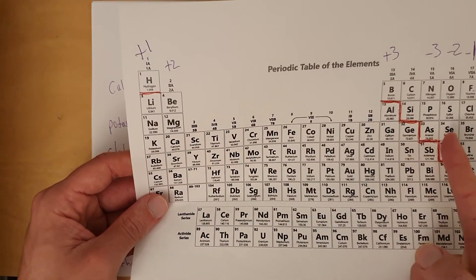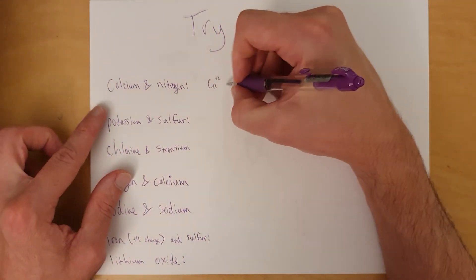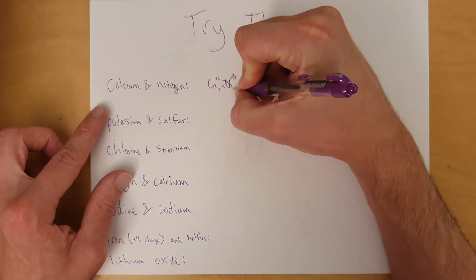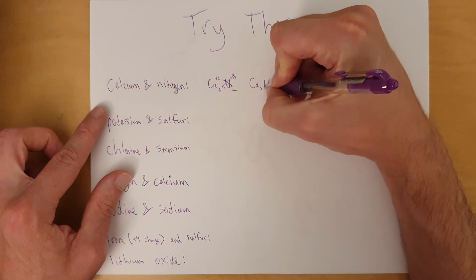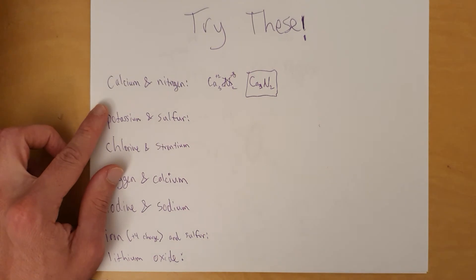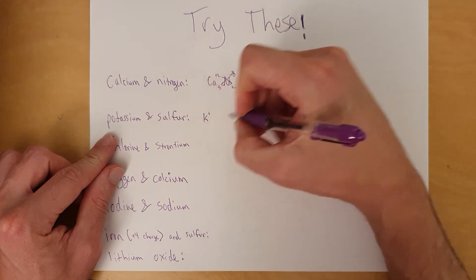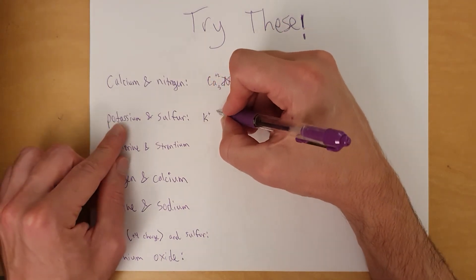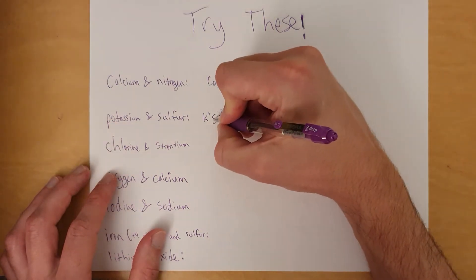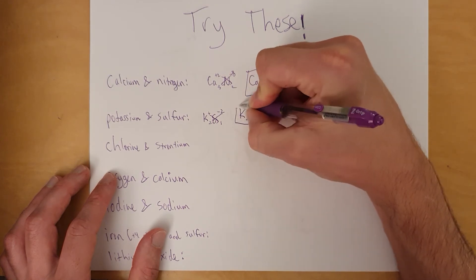Calcium is a plus two, nitrogen is a minus three. So Ca plus two, and the positive one goes first. Nitrogen minus three. Put the three here, put the two here — Ca₃N₂. Next, potassium and sulfur. Potassium on the periodic table is a plus one, and it goes first because it's positive. Sulfur is a minus two. So I put the two here, I put the one here — K₂S is my final formula.